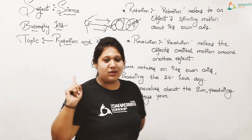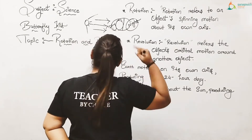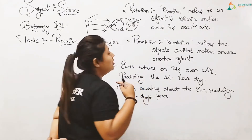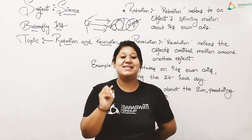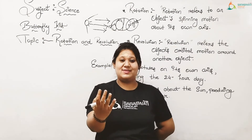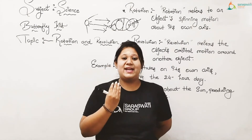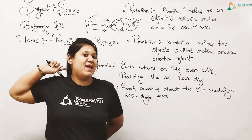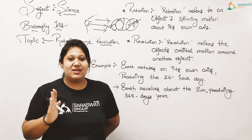If I turn away, I will see my back portion. When you consider yourself as the sun, the front side will be day and the back side is night. Clear?